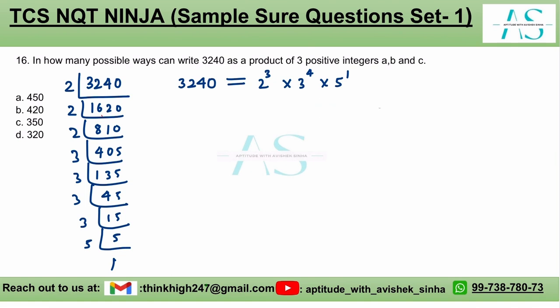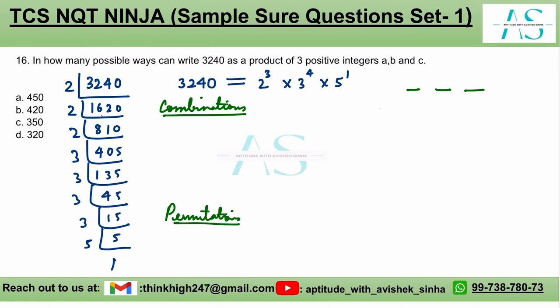What is asked is the product of 3 positive integers A, B, and C. We have these prime factor values to distribute, so we'll use the formula for combinations. We'll look at the formula for permutation and combination — a combination of these will give the answer. Starting with distributing all the 2s.